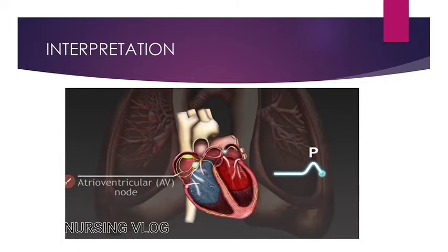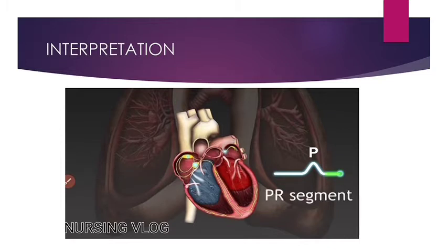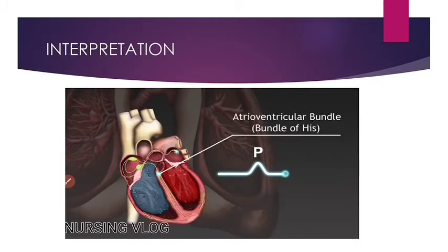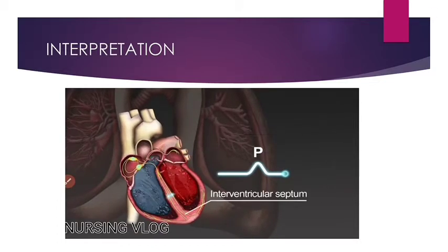Then, the SA node signal is transmitted through the AV node and makes a flat line on ECG, known as the PR segment. Then, as the impulse is transmitted through the bundle of His, the Q-wave is produced.